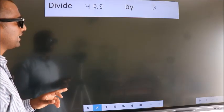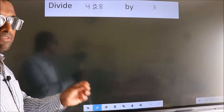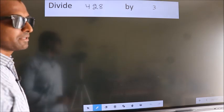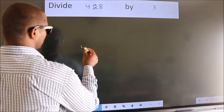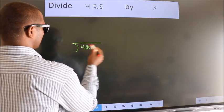Divide 428 by 3. To do this division, we should frame it in this way. 428 here, 3 here.